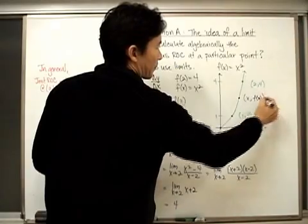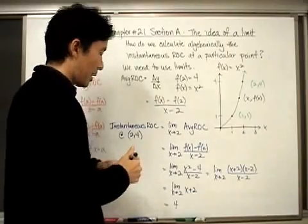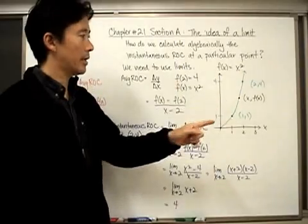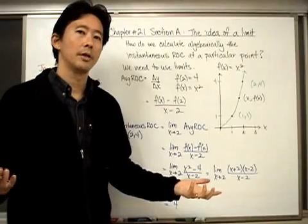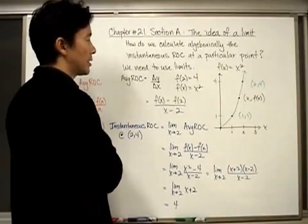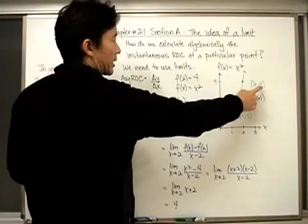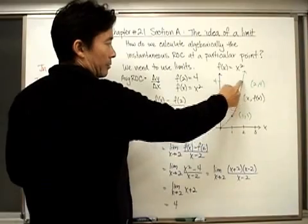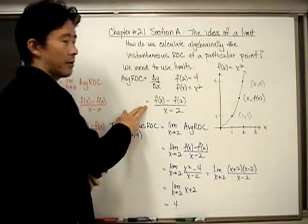Even using these two points — (2, 4) and (x, f(x)) — we can still calculate the average rate of change between them, since we have two coordinates. Taking the change in y over the change in x gives us f(x) minus f(2) divided by x minus 2, which is the slope between those two points.